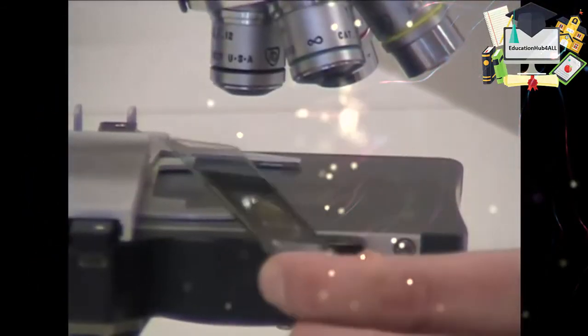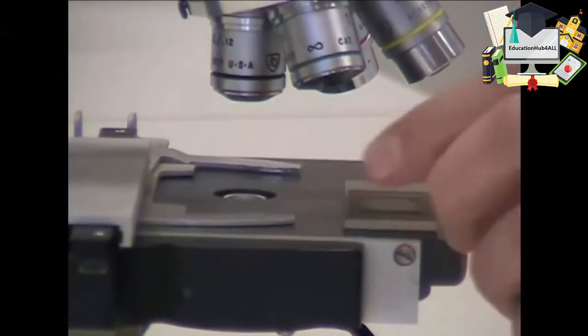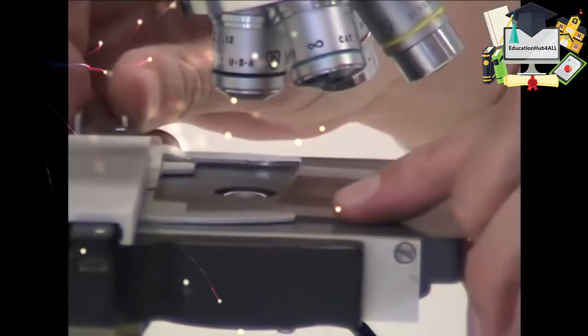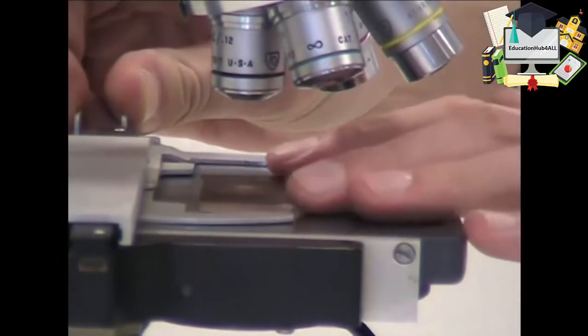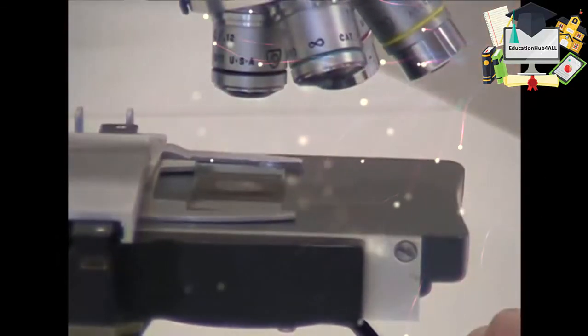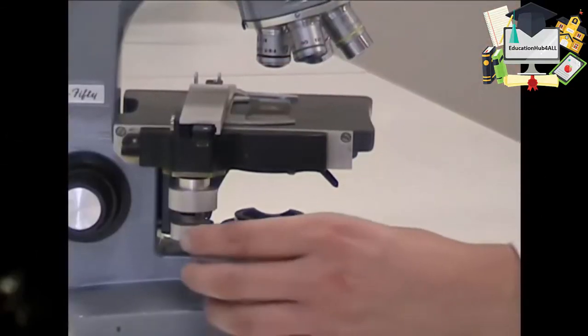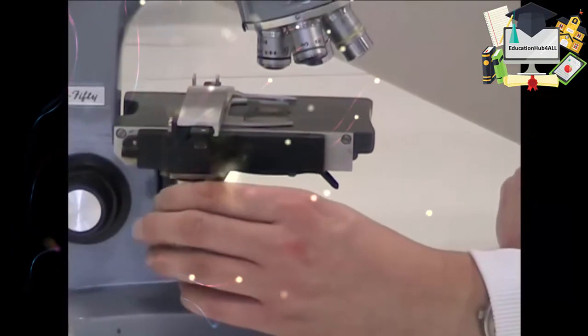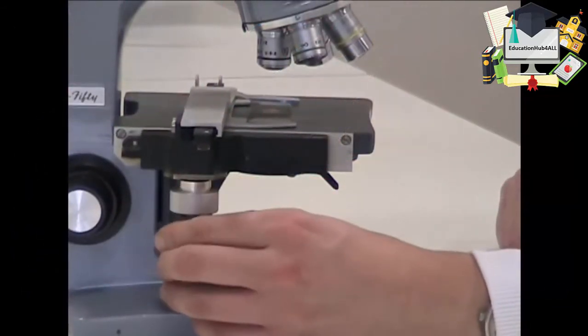Here's a prepared slide that we're going to look at. Put it on the stage of the microscope and clip it in place like so. To move the slide around the stage you can use the stage controls like this.